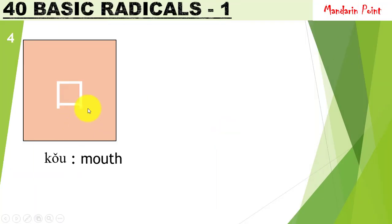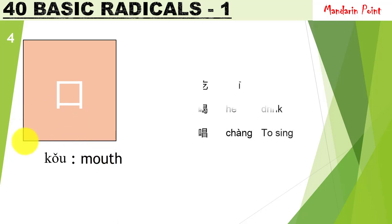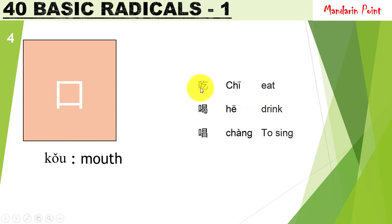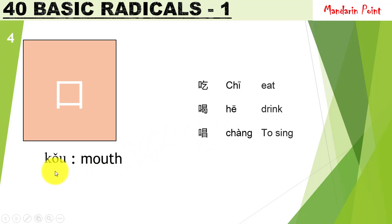The next radical is 口 kǒu, meaning 'mouth.' This radical represents any activity which can be performed through the mouth. For example, 吃 chī meaning 'eat' — kǒu is present on the left side. 喝 hē meaning 'drink' — kǒu is present. And 唱 chàng meaning 'to sing' — kǒu is present on the left side, representing the activity performed through the mouth.